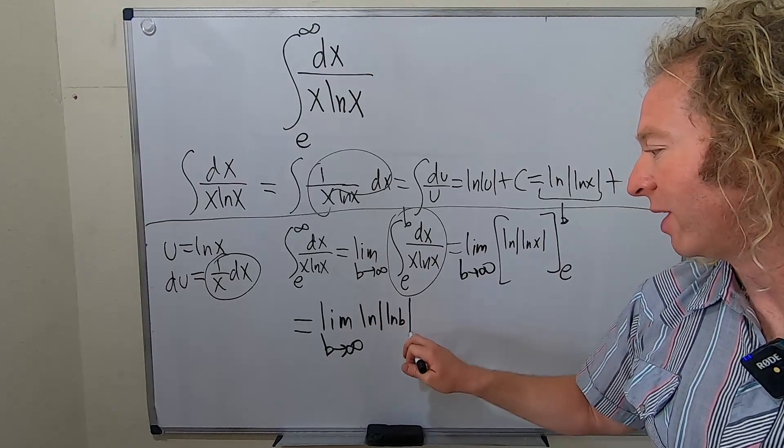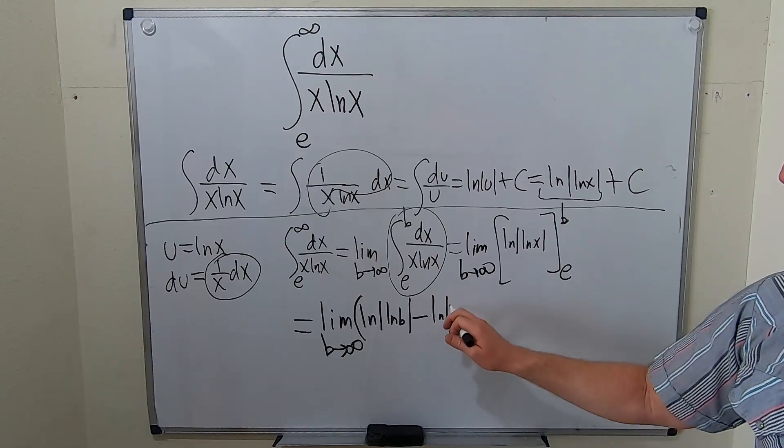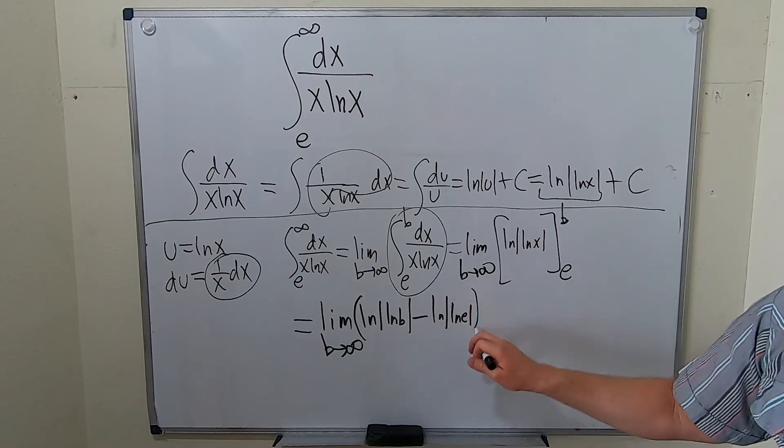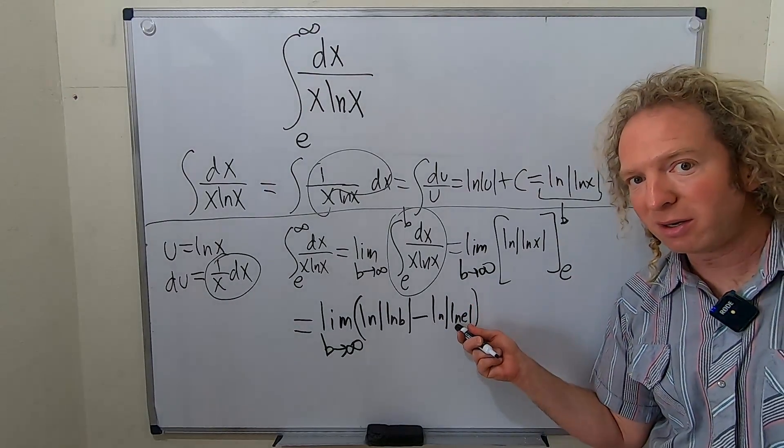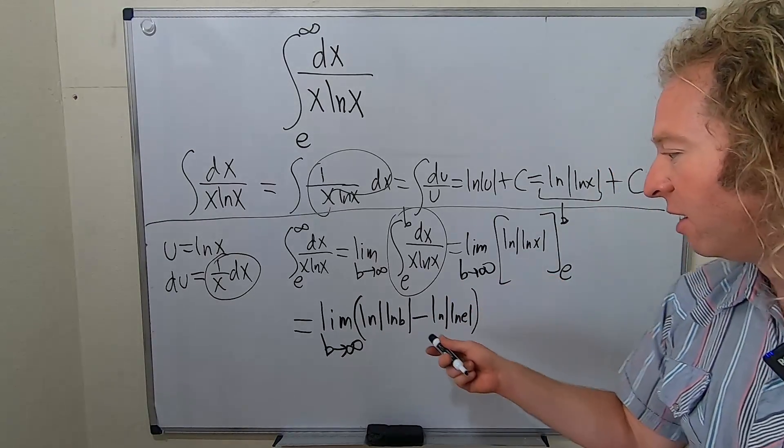So we plug in the b for the x. This will be ln absolute value ln b, absolute value, put a parenthesis here, minus ln absolute value ln e. ln e is one, so this becomes the ln of one, so this becomes zero. So this is no problem, this is good.